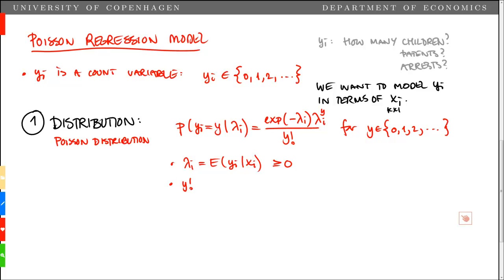Second, the factorial of y is defined as y multiplied by y minus 1, all the way down to 1. So, this is just the usual factorial function. So, this was the first step, the distribution.